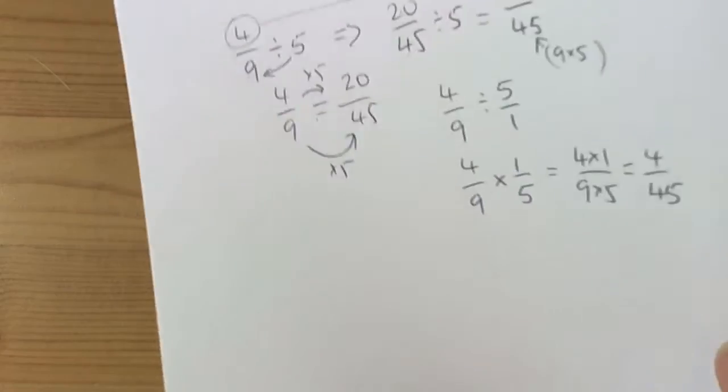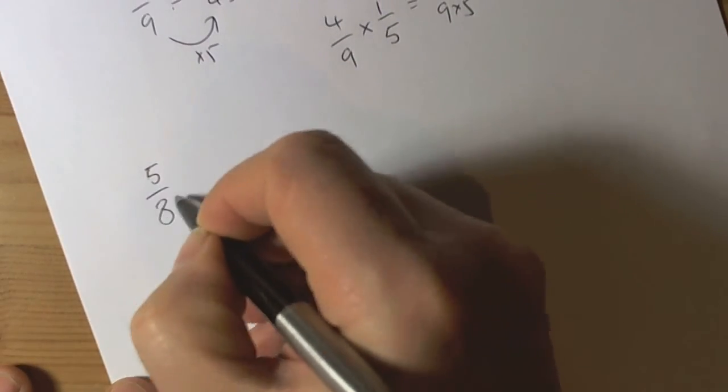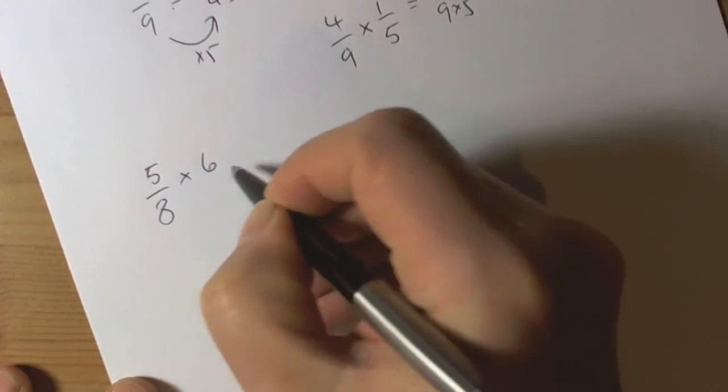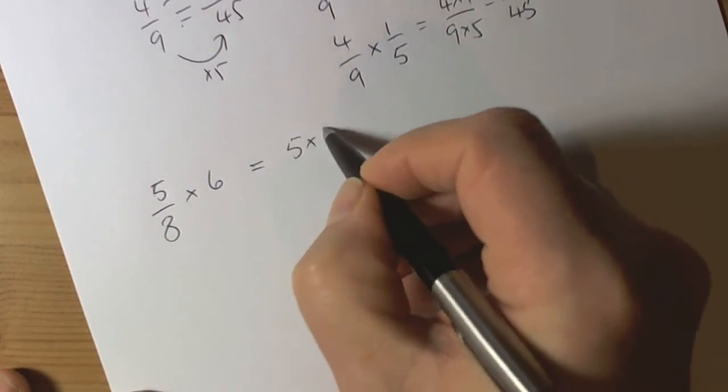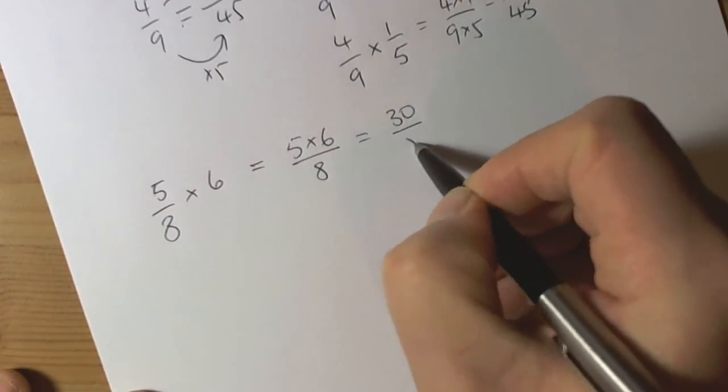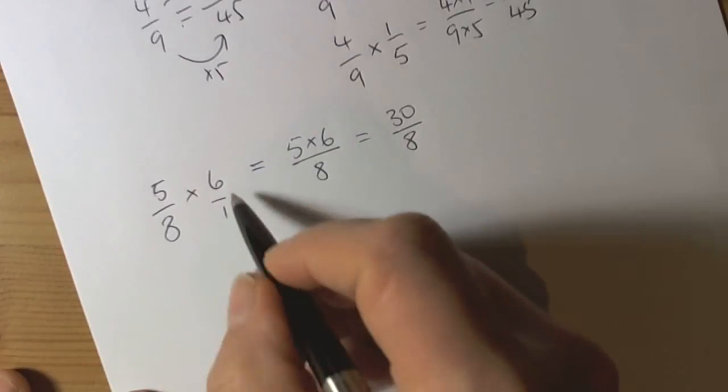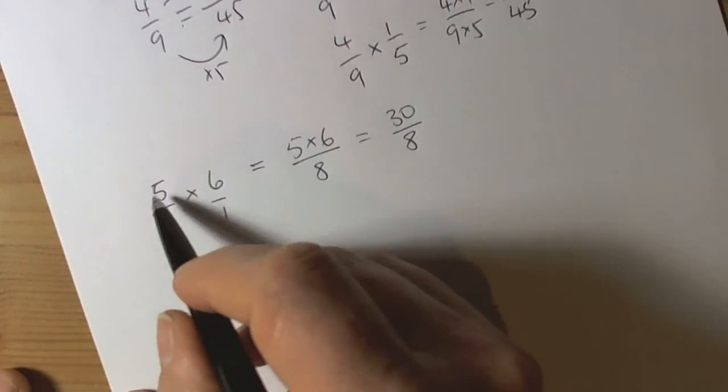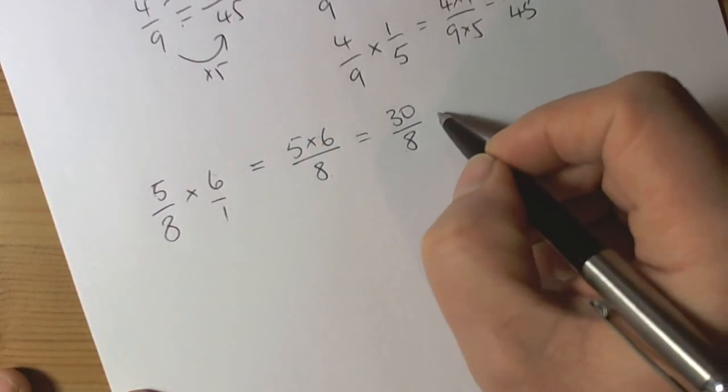So a couple more examples. So if I'm doing 5 eighths times 6, then I can think of that as 5 times 6 over 8. Which gives me 30 over 8. I'm only multiplying the numerator. Because remember, it's like thinking of 6 over 1. So 5 times 6, 8 times 1.